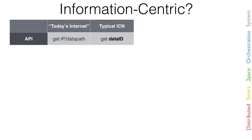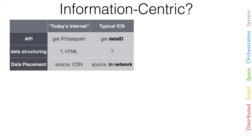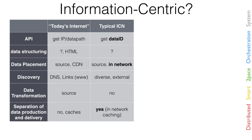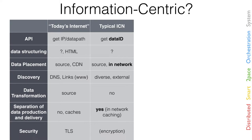On the left side you see what the Internet today has as API, and on the right what our VSL has. The dimensions we cover are: data structuring, data placement, data discovery, data transformation — meaning if you have data in one format in the IoT you might need it in another. Separation of data production and delivery, which is an important aspect of our middleware. And last but not least, from my perspective the most important one: security.